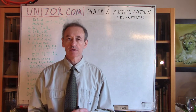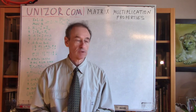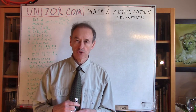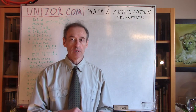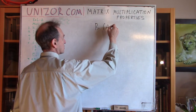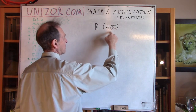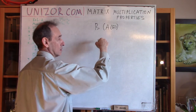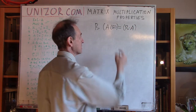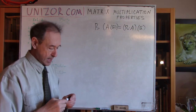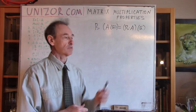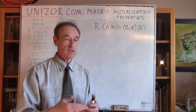We continue talking about properties of matrix multiplication. Let's recall that I started looking for a reasonable definition of matrix multiplication based on the following property: if you combine two linear transformations of one particular vector, first with matrix A and then with matrix B, it would be the same as if a properly defined multiplication of these two matrices is applied to the same vector U. This is actually associativity, and we introduced the multiplication of matrix by vector and matrix by matrix using this particular property.